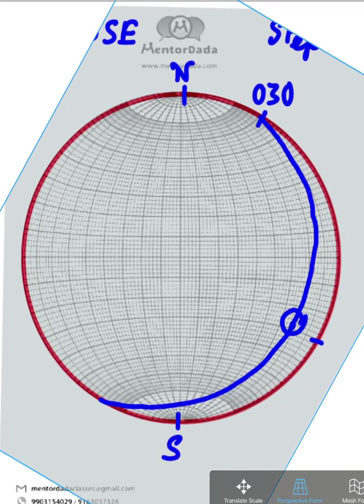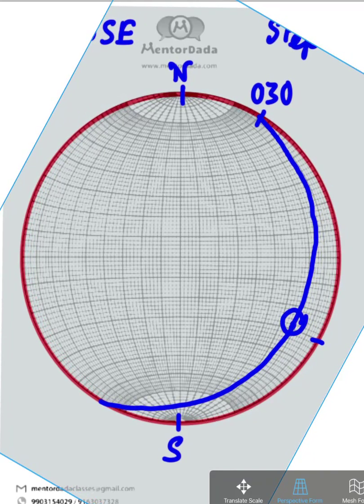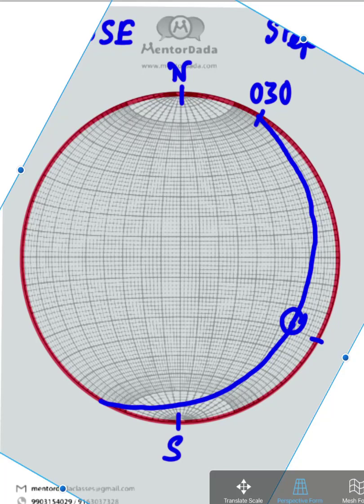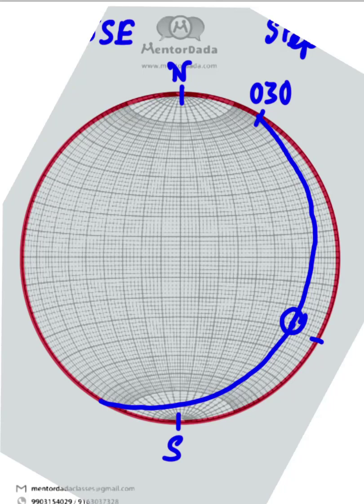After aligning the north and south in their respective positions, the plane would look like this. So this is how we plot a plane in stereonet.